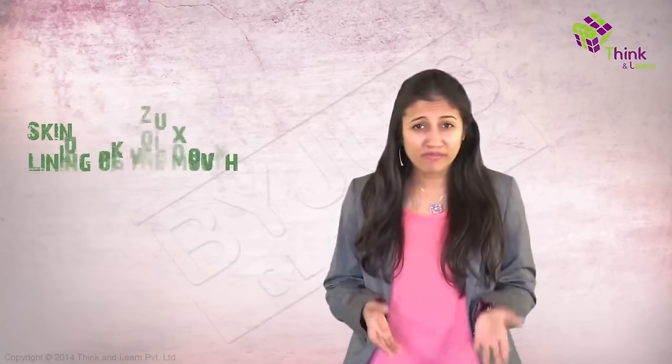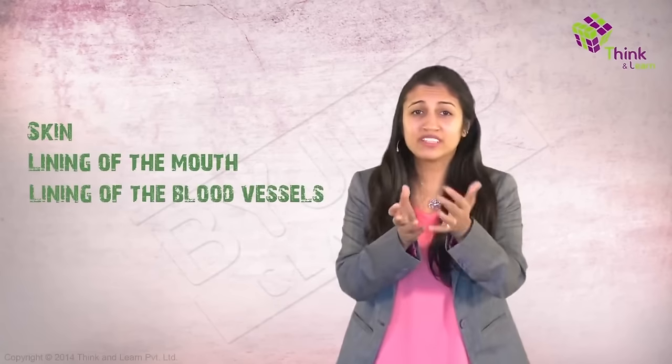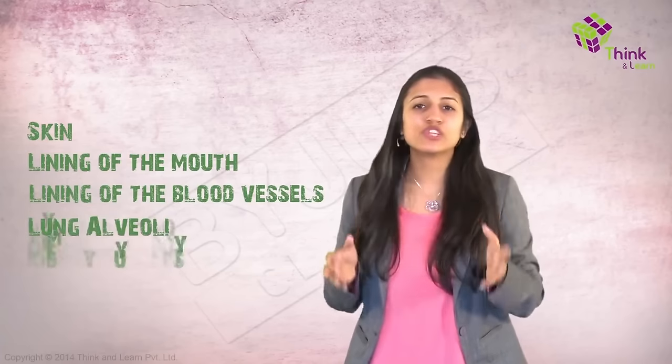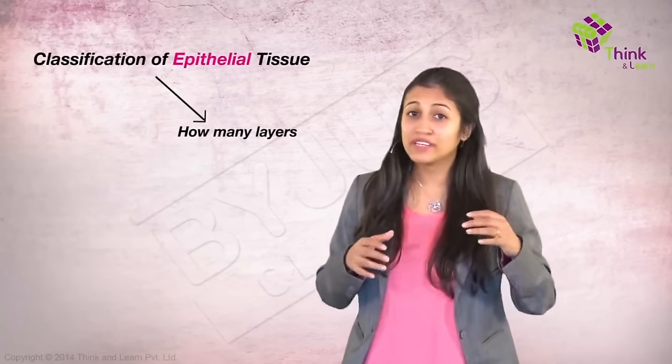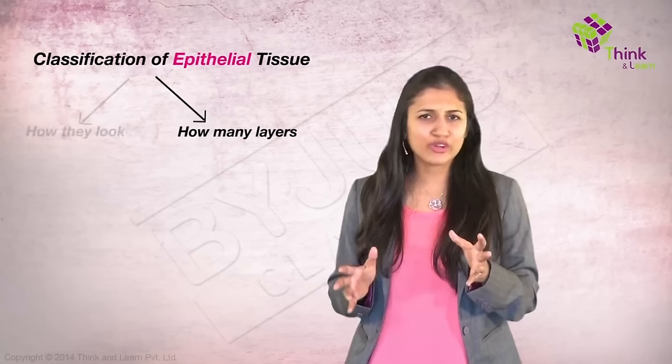The skin, the lining of the mouth, the lining of the blood vessels, the lung alveoli, kidney tubules - all of these are made of epithelial tissue. They are classified based on how many of them are there together, that is how many layers are there and how they look.